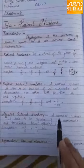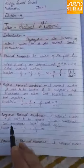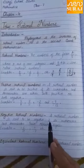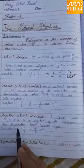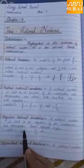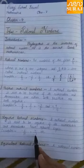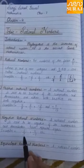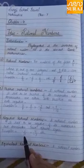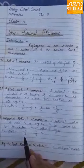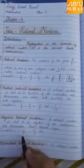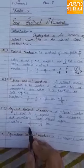Negative rational numbers: A rational number is said to be negative if its numerator and denominator have opposite signs. For example, minus 6 upon 19 — minus 6 is a negative integer and 19 is a positive integer, so they have opposite signs.